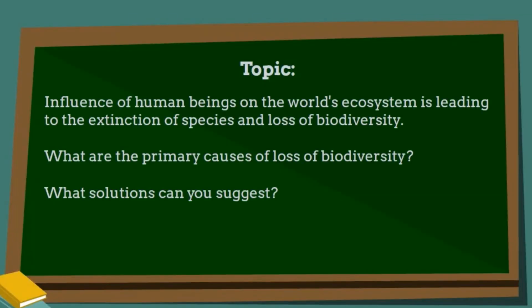Look at the topic. Influence of human beings on the world's ecosystem is leading to the extinction of species and loss of biodiversity. What are the primary causes of loss of biodiversity? What solutions can you suggest? Note that it says what are the primary causes and what solutions do you suggest — solutions and causes — that means you need to provide more than one cause and more than one solution.